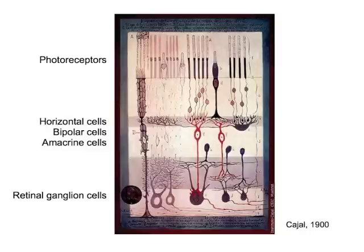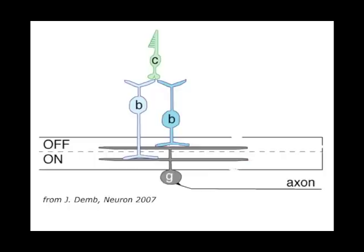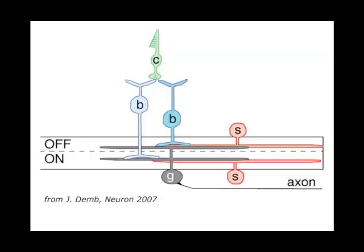Direction-selectivity emerges as an interaction between excitation and inhibition. Excitation provided by bipolar cells and inhibition provided primarily from starburst-amacrine cells, which release GABA.